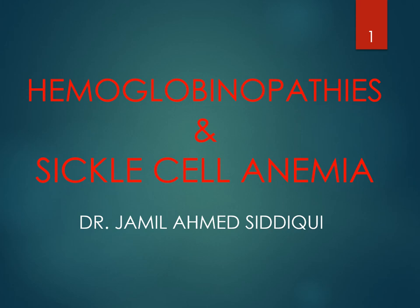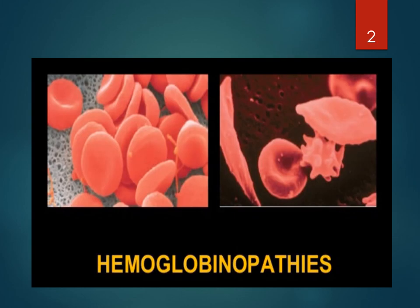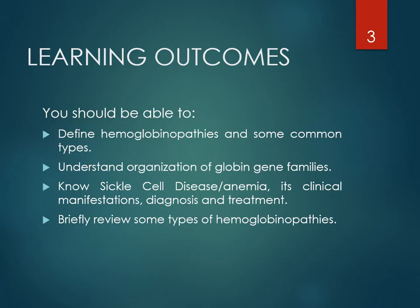Bismillah ar-Rahman ar-Rahim. Jamil Shidiki is here. The current topic is hemoglobinopathies and sickle cell anemia. Learning outcomes are: define hemoglobinopathies and list some common types; understand the organization of globin gene families; know sickle cell disease or sickle cell anemia, its clinical manifestations, diagnosis, and treatment; and briefly characterize some types of hemoglobinopathies.